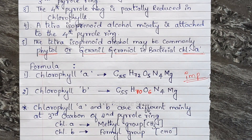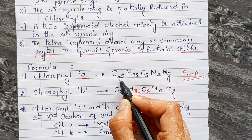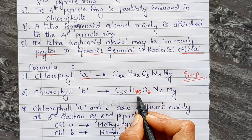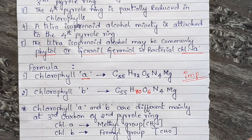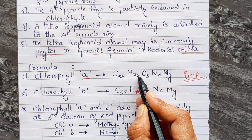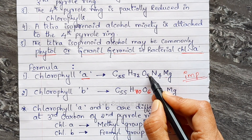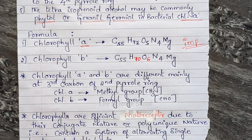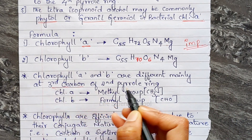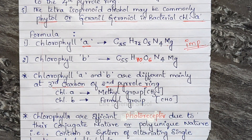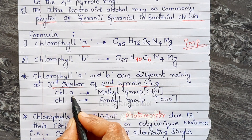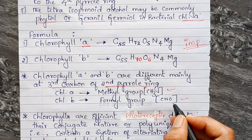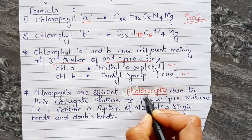The molecular formula of chlorophyll a is C55H72O5N4Mg, and the formula of chlorophyll b is C55H70O6N4Mg. The difference: in chlorophyll a, hydrogen count is 72 and oxygen is 5; in chlorophyll b, hydrogen is 70 and oxygen is 6. Chlorophyll a and b differ mainly at the third carbon of the second pyrrole ring: in chlorophyll a, a methyl group is present; in chlorophyll b, a formyl group (CHO) is present.